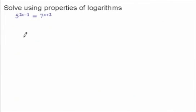This is probably one of the more difficult equations to solve, and we're going to solve it using properties of logarithms. Here we have 5 raised to the 2x minus 1 is equal to 7 raised to the x plus 2.